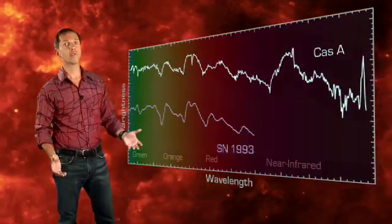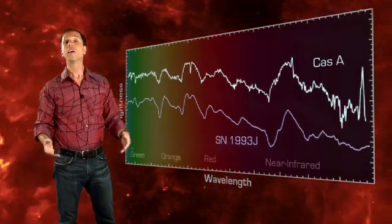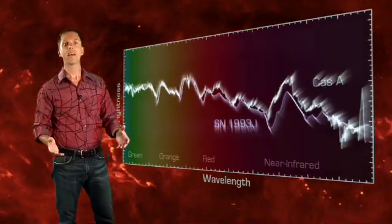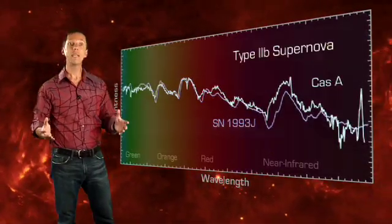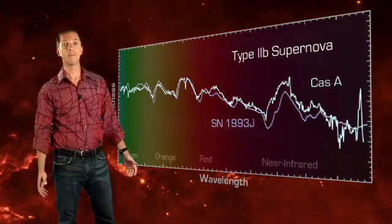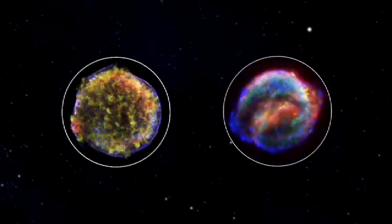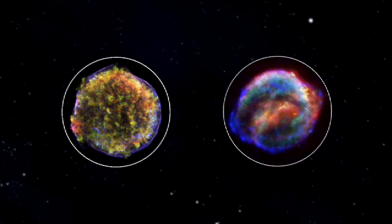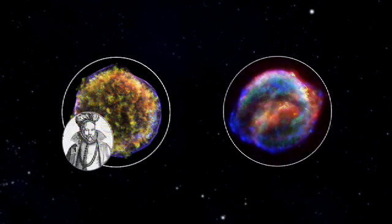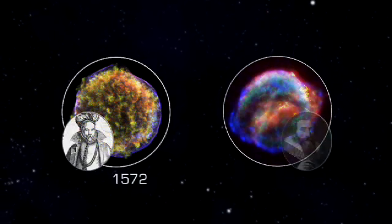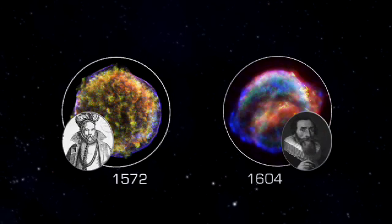By matching its visible light spectral signature to a well-studied supernova in a nearby galaxy, Krause and his team have identified it as a so-called Type IIb supernova. A Type IIb is fainter than the earlier Type Ib supernovas noted by Tycho Brahe in 1572 and Johannes Kepler in 1604.